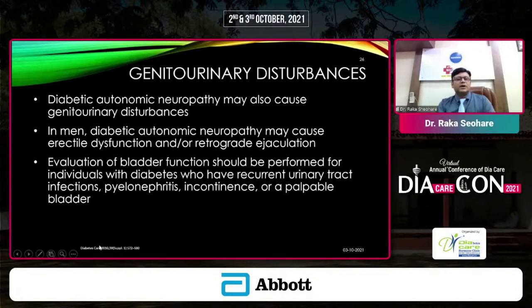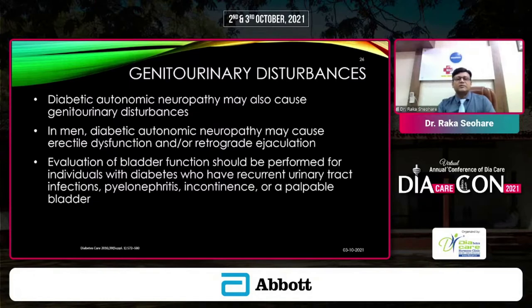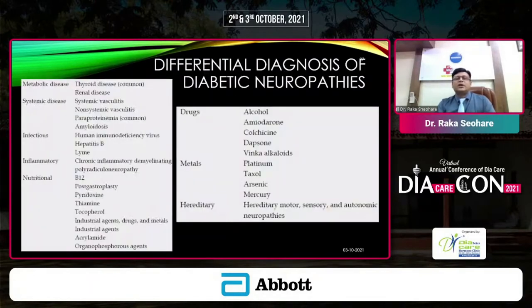Genitourinary disorders are another important area often neglected by physicians. In men, diabetic autonomic neuropathy may cause erectile dysfunction or retrograde ejaculation. Evaluation of bladder function should be performed in individuals with diabetes who have recurrent urinary tract infections. Differential diagnosis of diabetic neuropathy is important because these systemic presentations can have different causes, and a high degree of clinical suspicion is needed — any presentation should not be attributed solely to autonomic neuropathy.